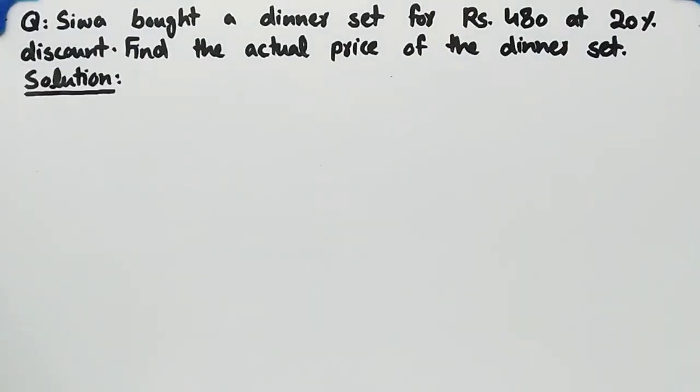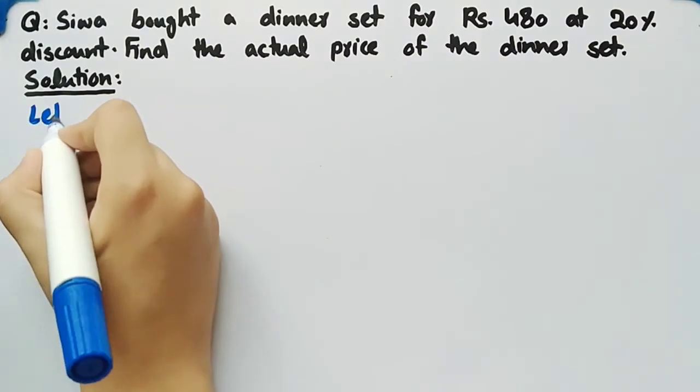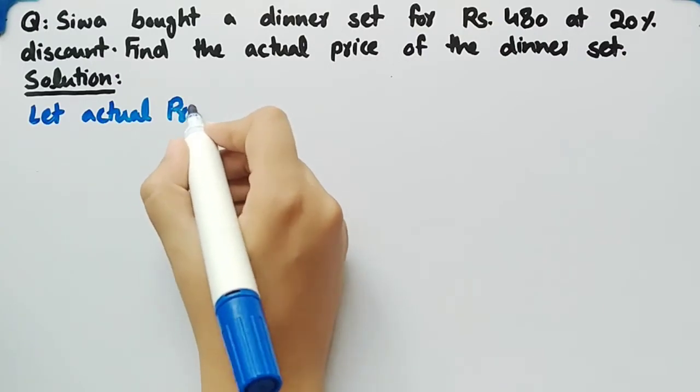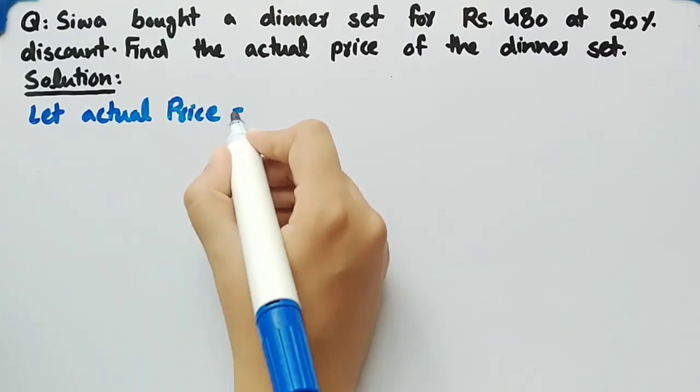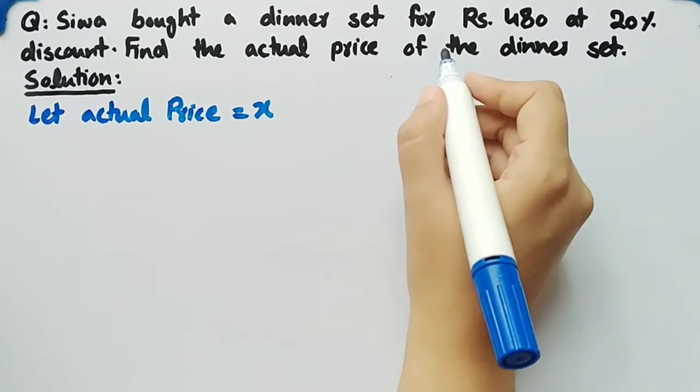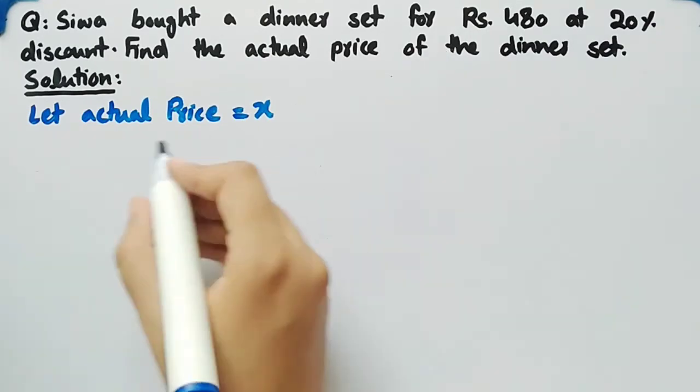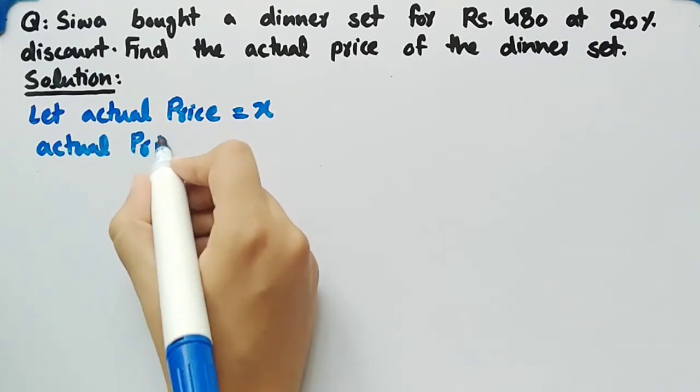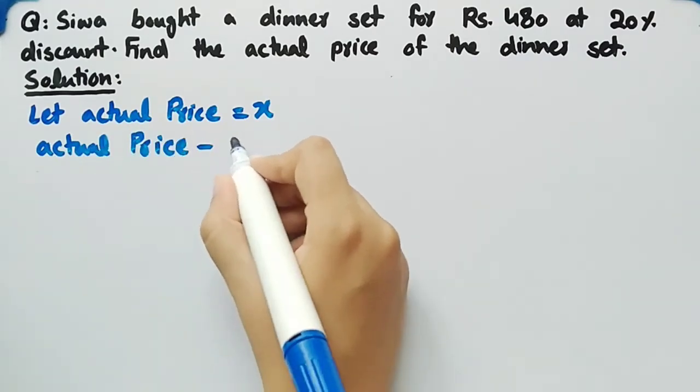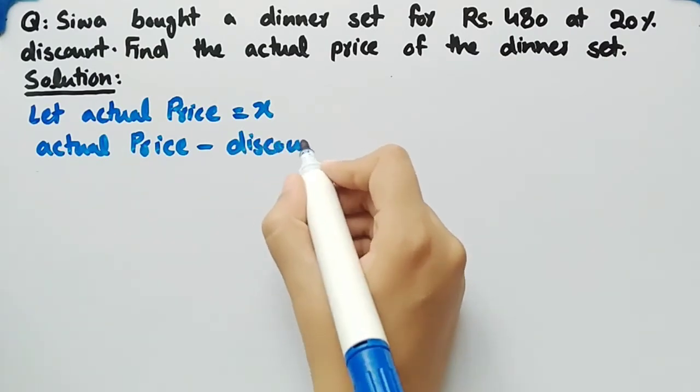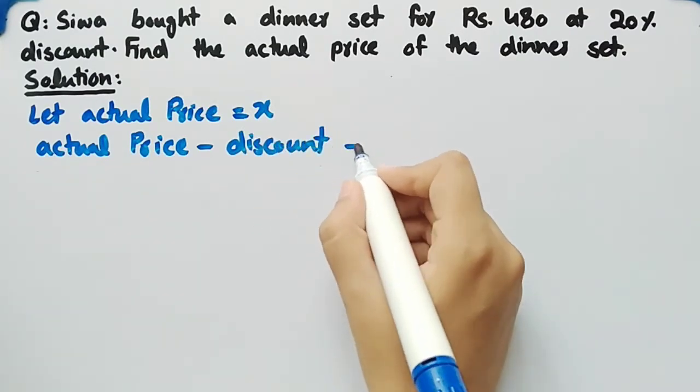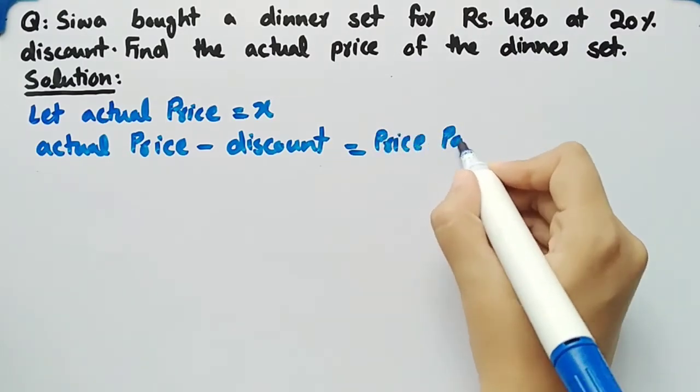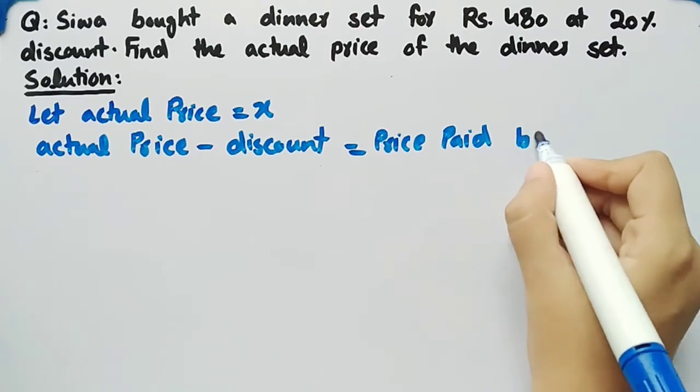Firstly, let's consider actual price be equal to X. According to the given data, we can write that actual price minus discount is equal to price paid by Siva.